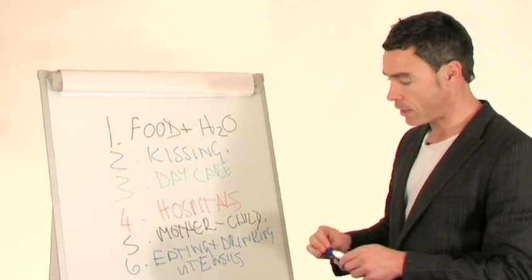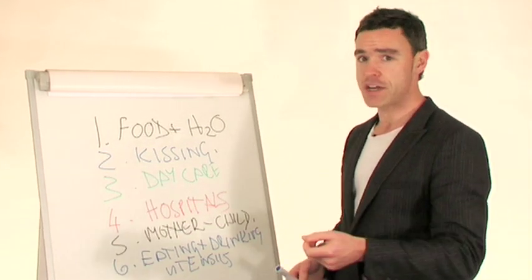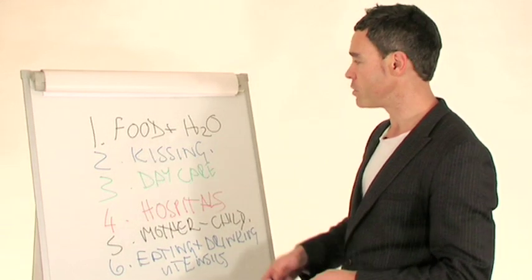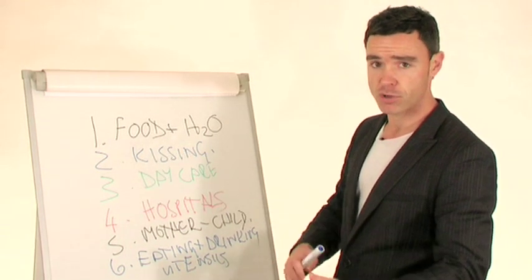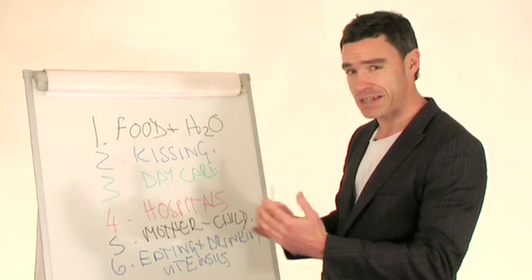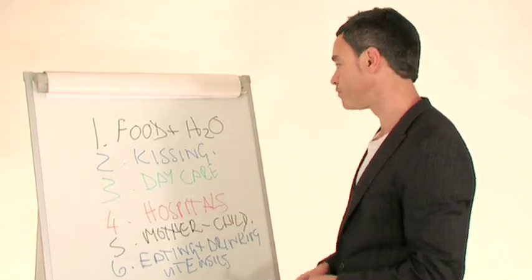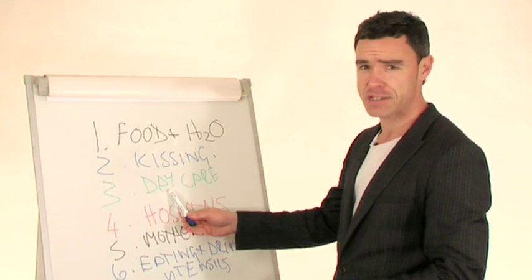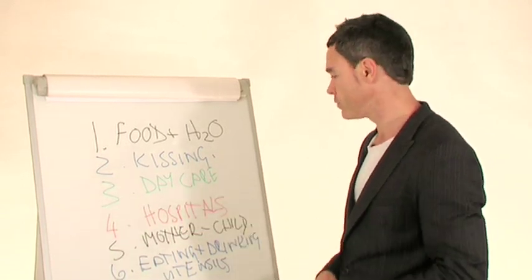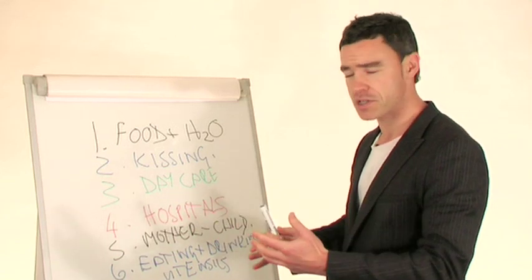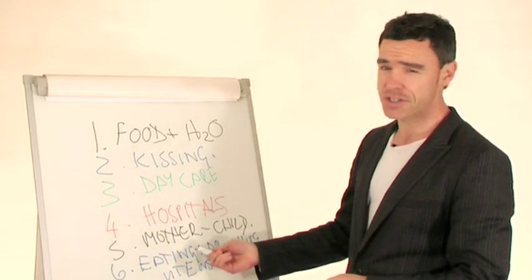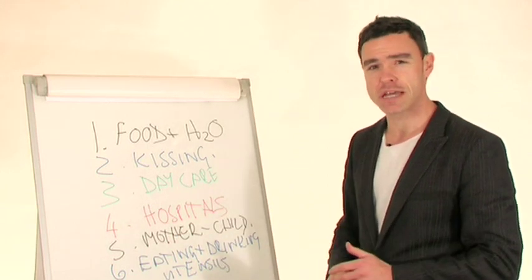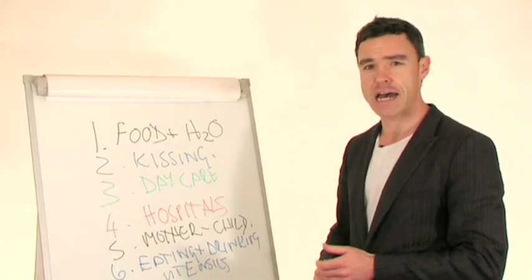So just to recap, if you have H.Pylori, you could conceivably have picked it up in any of these routes, food and water, maybe at a restaurant or when you're on holiday, potentially where the sanitation was not so good, kissing or sexual contact, daycare centres or close contact with children, hospitals through certain procedures, mother to child, and eating and drinking, sharing eating and drinking utensils with people who are infected as well.